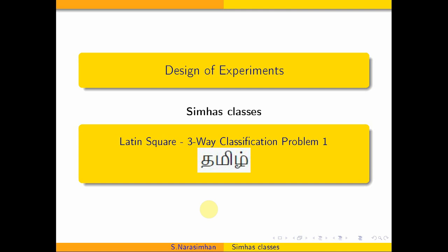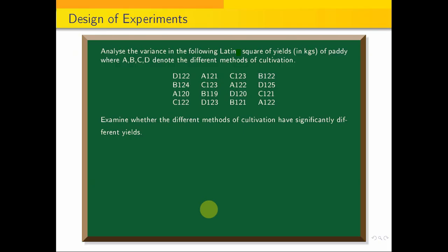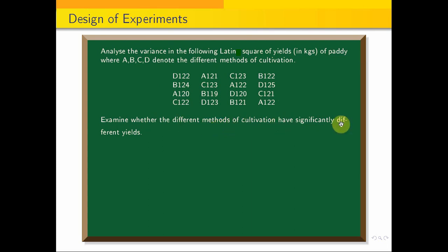Hi students. Welcome to same-mass classes. Design of experiments: Latin square three-way classification problem. We will solve the problem. Here is an example: analyze the variance in the following Latin square of yields of a paddy where A, B, C, D denote the different methods of cultivation. Examine whether the different methods of cultivation have significantly different yields.